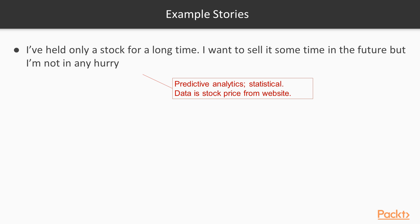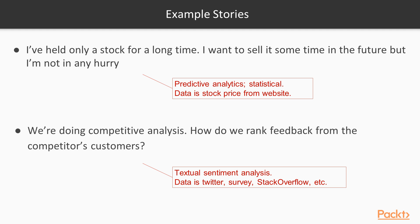One example story is: I've held a stock for a long time, I want to sell it some time in the future, but I'm not in any hurry. We want to figure out the maximum amount of profit someone can make, or the minimal loss they can make. What I might want to look at is predictive analytics — this is a bit of a statistical problem — and I might be able to get my data from a stock price website or a CSV file.